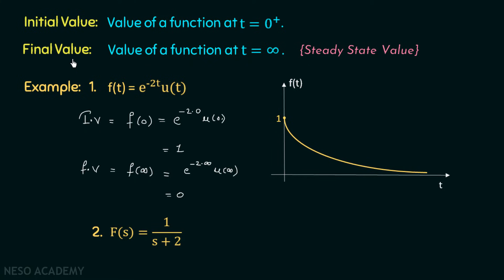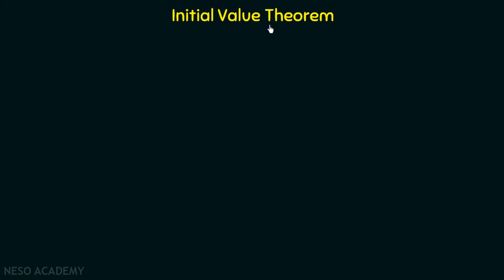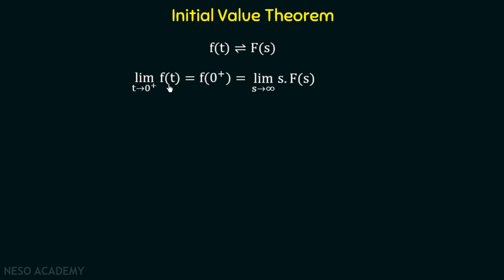Now we will discuss the initial value theorem. It is the property of Laplace transform by which we can find the initial value of a function in the s domain. If f(t) is a time domain function with Laplace transform F(s), then the initial value is: limit t tending to 0 of f(t), equal to f(0 plus), equal to limit s tending to infinity of s times F(s). Time and frequency are reciprocal of each other, so when t tends to 0 in time domain, s tends to infinity in the s domain.